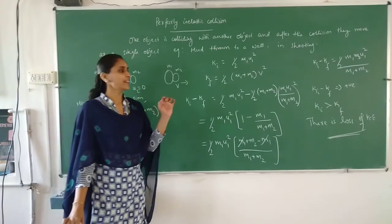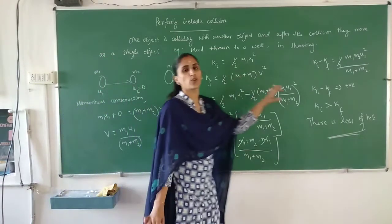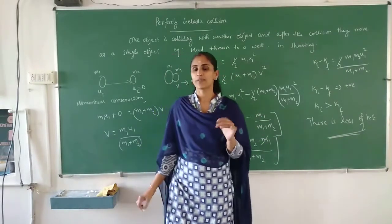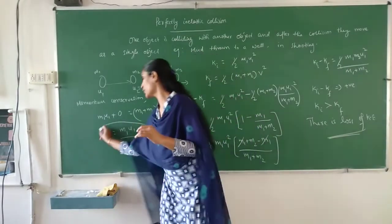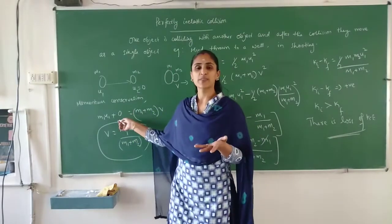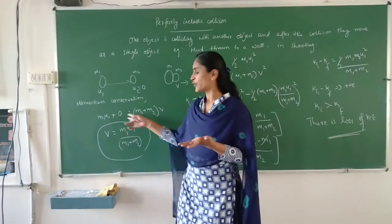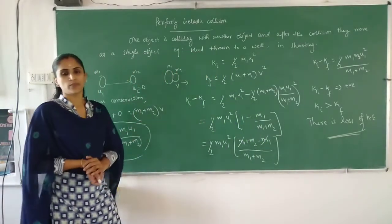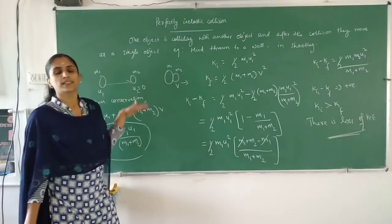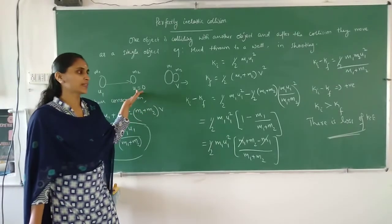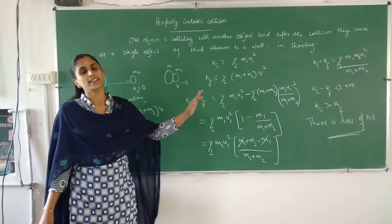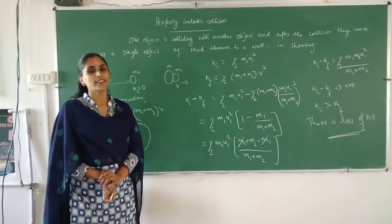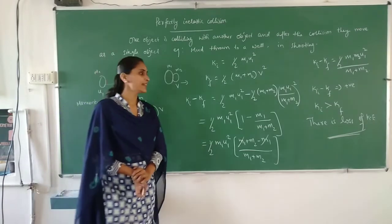So there is always a loss of kinetic energy in a perfectly inelastic collision. In problems, sometimes they may ask you to find the common velocity, and by using this formula you can find it. If the second object is not at rest, we can substitute M1 U1 plus M2 U2 equal to (M1 + M2) V accordingly.